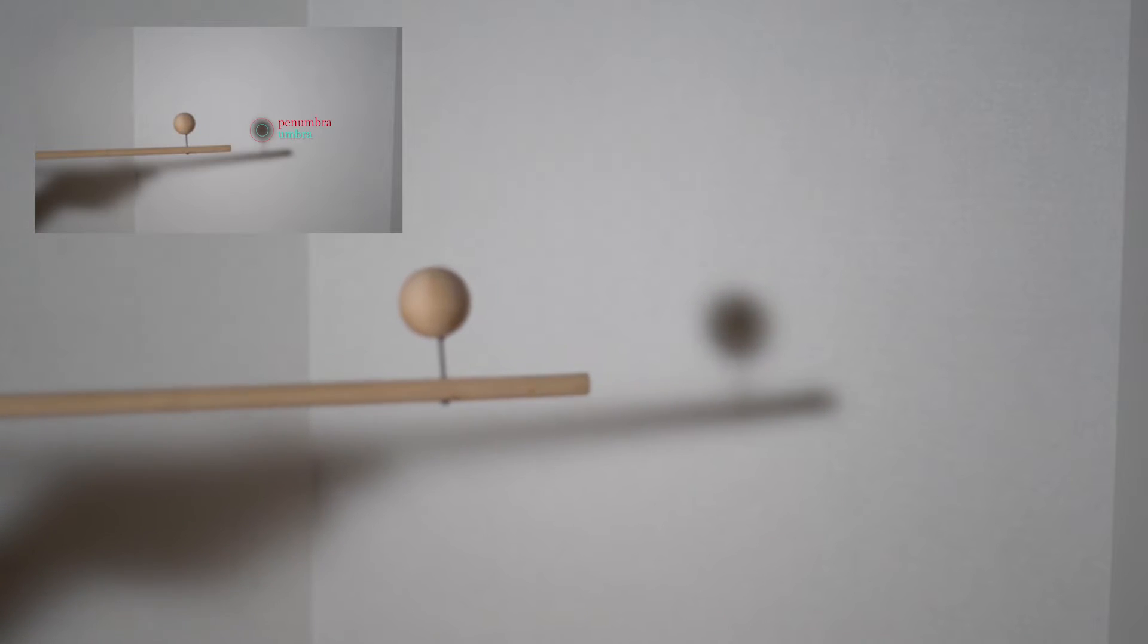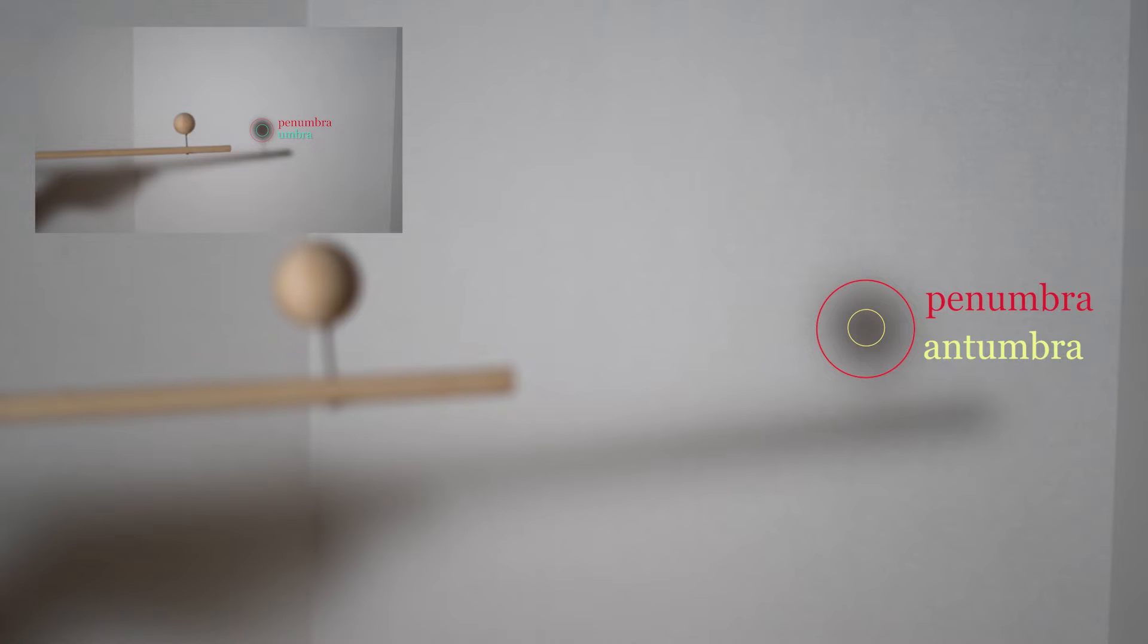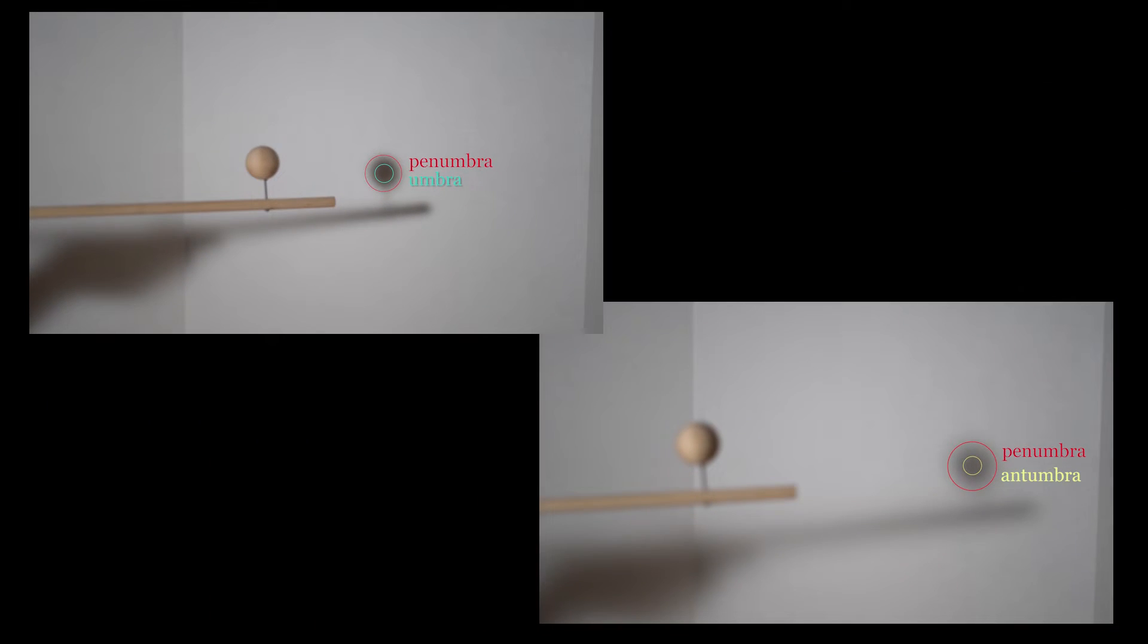When the ball is moved farther from the screen, the umbra no longer reaches the screen, and we see the antumbra surrounded by the penumbra. We can see how the earlier umbra is not as dark as the present antumbra when comparing the two.